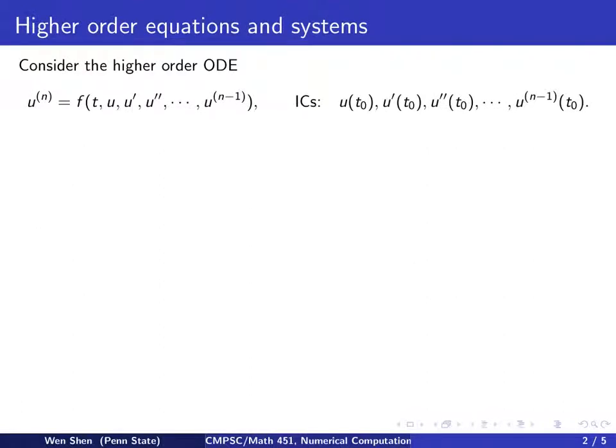We now look at higher-order equations and eventually higher-order systems of equations. Let's consider one single higher-order ODE in this form. This is an nth-order equation, so u to the nth derivative equals some function f, depending on t, u, and all the lower derivatives of u: u prime, u double prime, all the way to u to the n minus 1 derivative. We are also given a set of initial conditions at t0 for u and all the lower derivatives of u. These are given numbers.